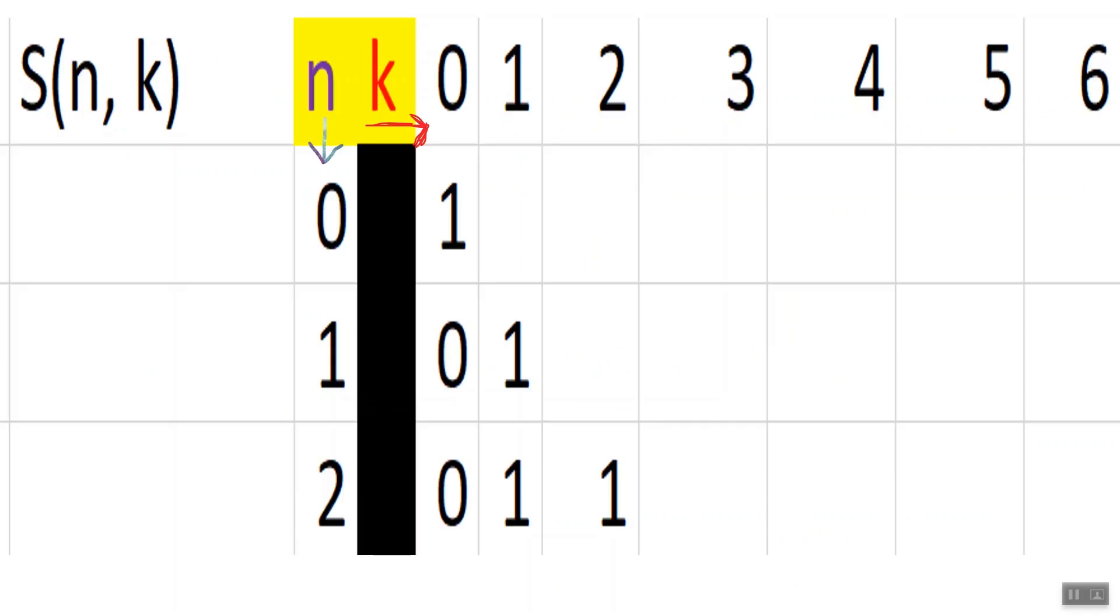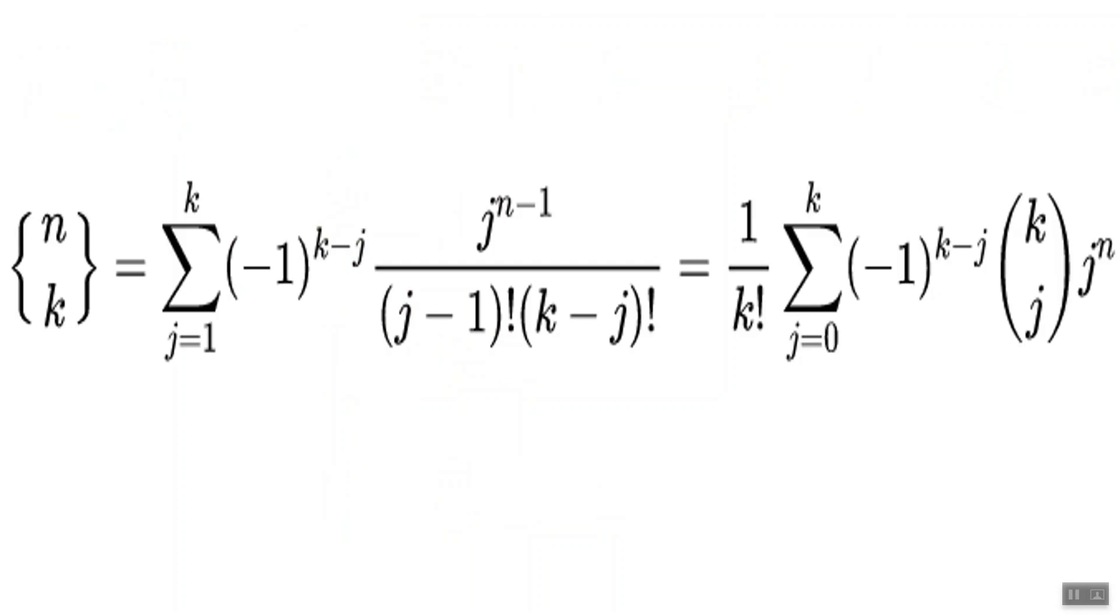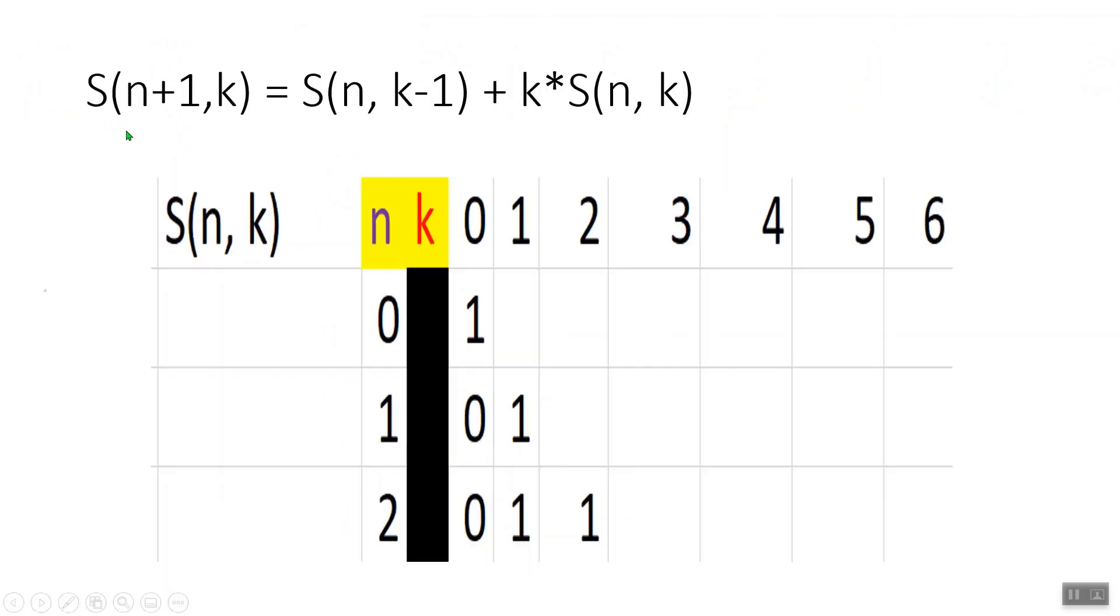Now comes the fun part. We can make an array of these numbers, with a column number representing k and a row number representing n. We have a lot of unknowns on our table right now. It is possible to find any S(n,k) using an explicit formula, shown here, which we'll cover in depth in one of our future videos.